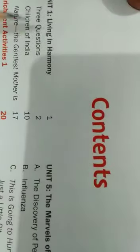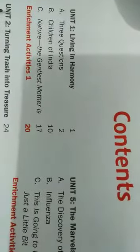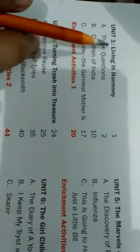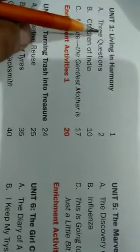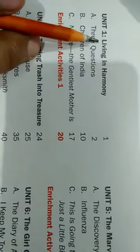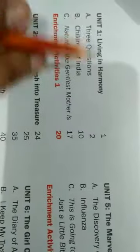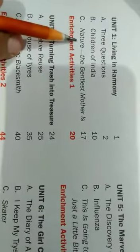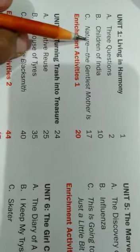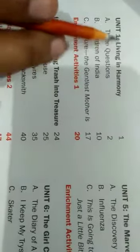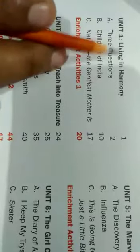Let me first make you aware of the chapters we have. These are organized in units: Unit 1, Unit 2, Unit 3, Unit 4, and so on. Each unit has its unique identity. In Unit 1, we have 3 chapters — Chapter 1: Three Questions, Chapter 2: Children of India, and Chapter 3: Nature, which is a poem. So we are going to study unit-wise.